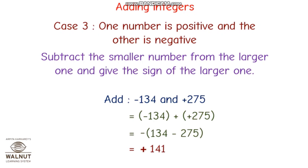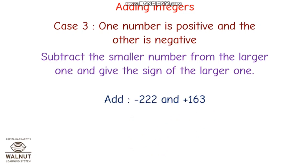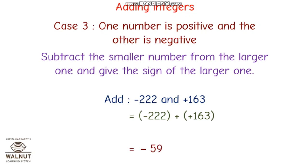If two numbers are different signs, subtract and give the answer the sign of whichever number is larger. For example, minus 222 plus 163 — the bigger number is 222, so the answer will be negative. Subtract: 222 minus 163 gives minus 59, because the larger number is 222 and it has a negative sign.